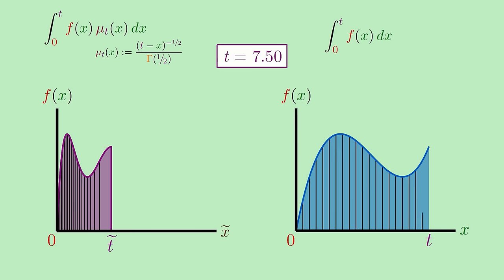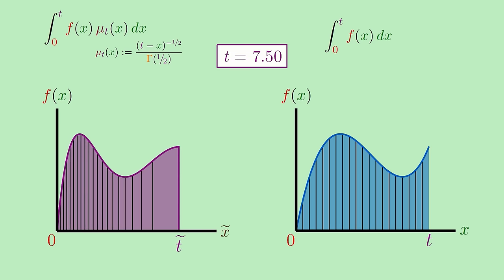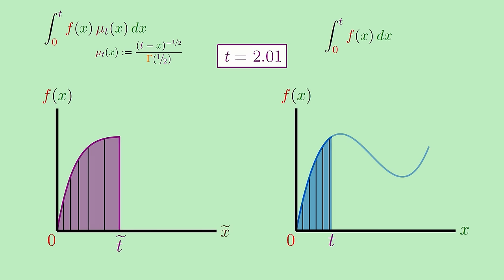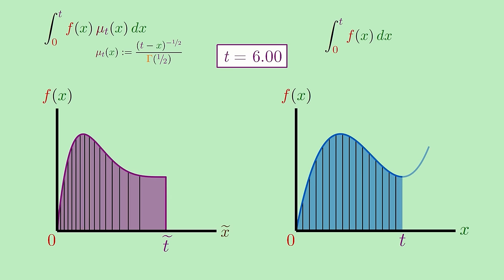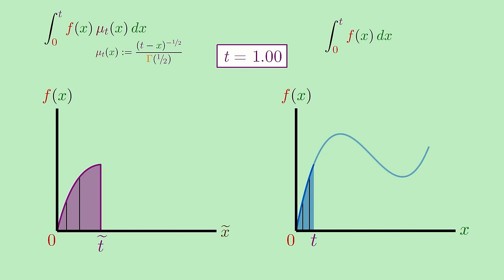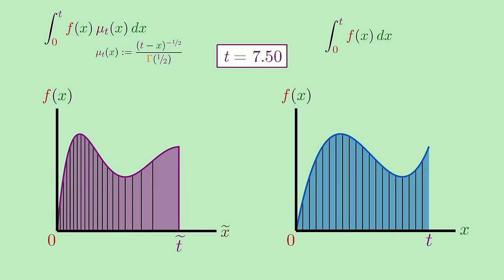To get a better idea of what's going on, let's see how the half integral changes as we vary the parameter t compared to the ordinary full integral. I'll also go and horizontally stretch the half integral graph a little so it's not too squashed and easier to see what's happening.